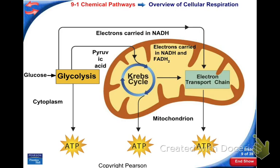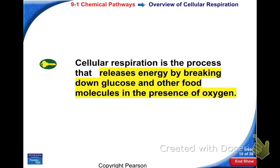You should understand that glycolysis gives you a very small amount of ATP compared to how much you get from the electron transport chain. That's what you want to do — the electron transport chain. We get the energy out of the food we eat by breaking it down to glucose molecules in the presence of oxygen.